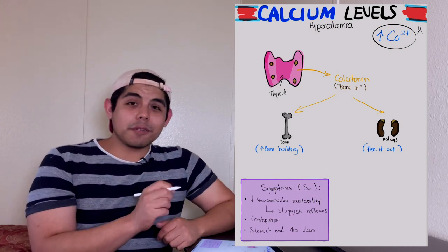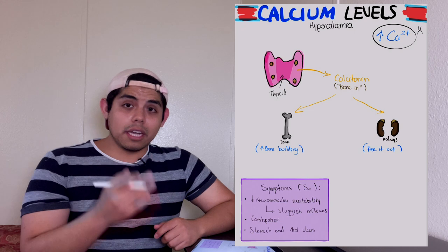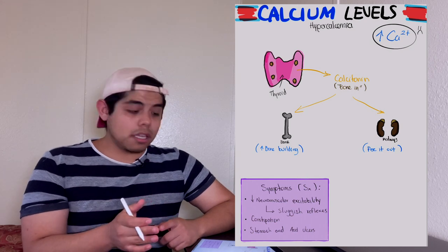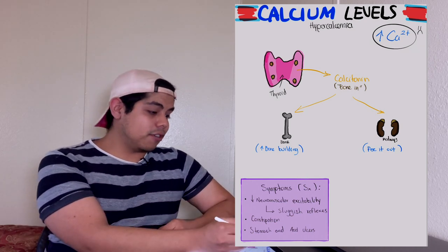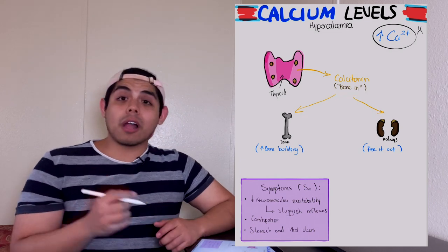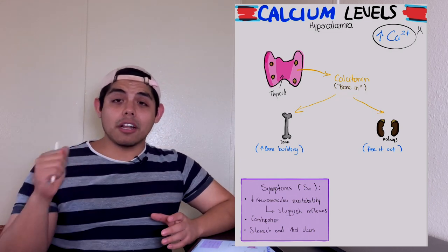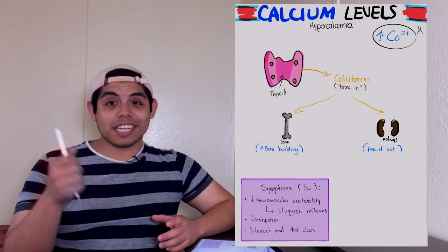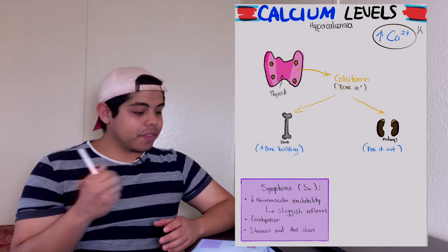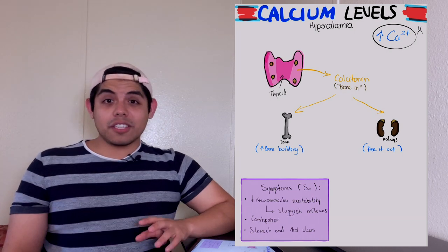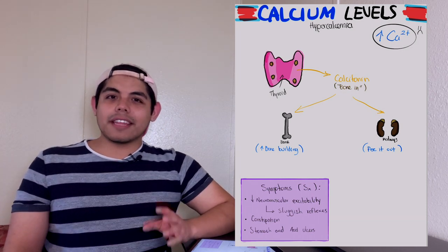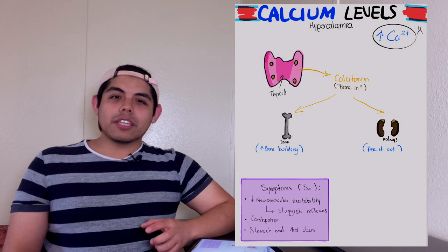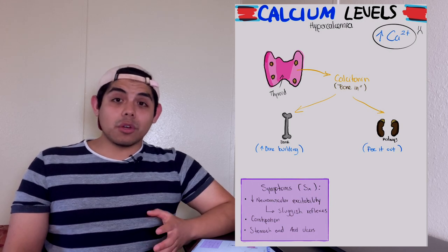So I have something here to remember what calcitonin does to bone: try to remember 'boning'. Calcitonin boning, because calcitonin will take the calcium and put it inside of the bone - bone in. My physiology instructor always uses this and I think that's a very good way to remember what calcitonin does to the bone.